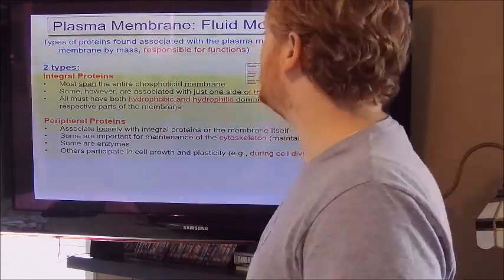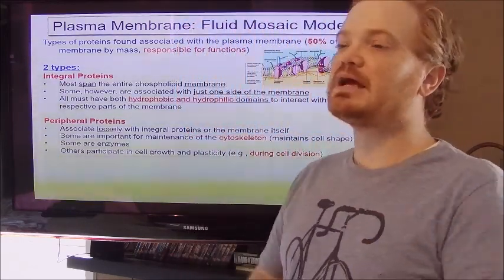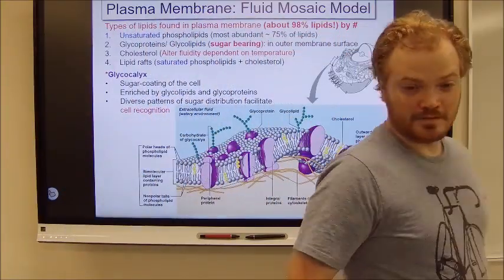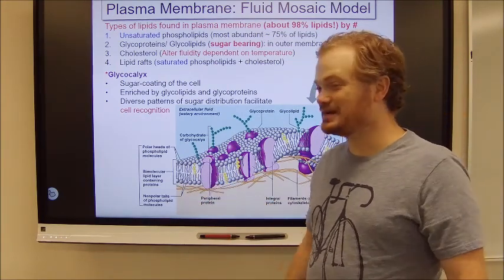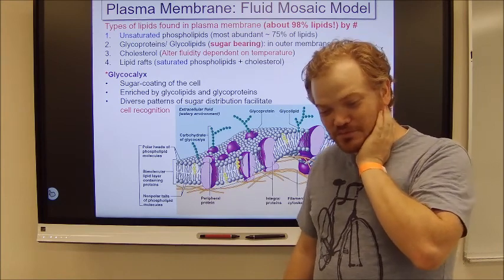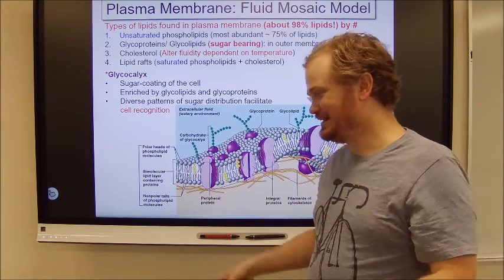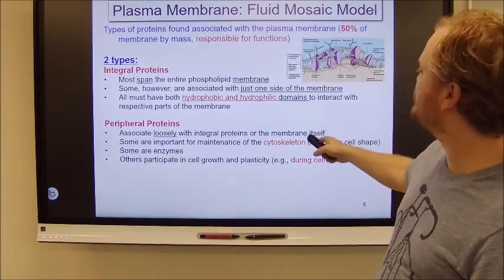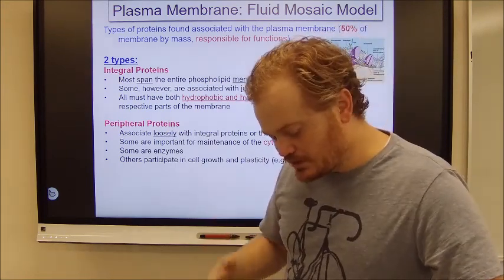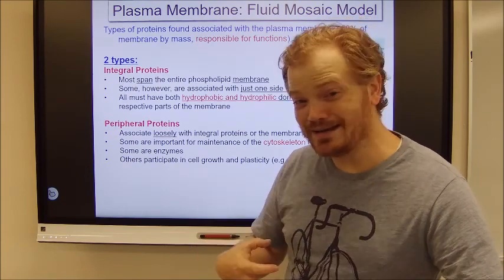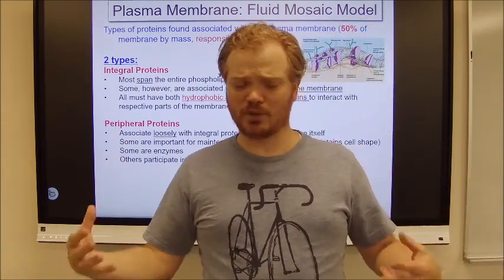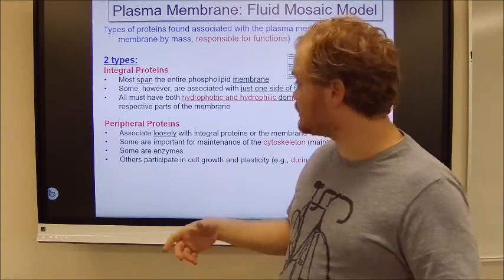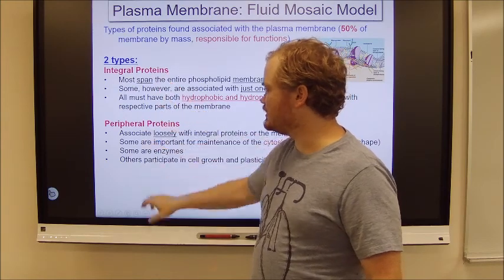So in the membrane, there are two types of proteins that are worthy of our consideration. All the proteins together make up a huge amount of the mass of your membrane. They actually make up about half of the membrane by weight. So they aren't that many of them, but they're massive and very heavy and weighty. They make up a lot of membrane by weight, and there are two types. There are peripheral proteins and there are integral proteins.